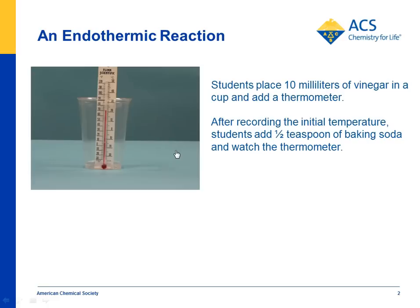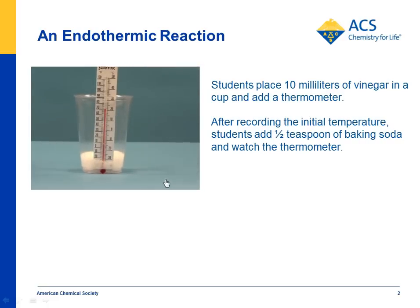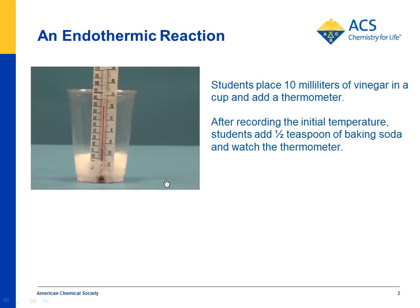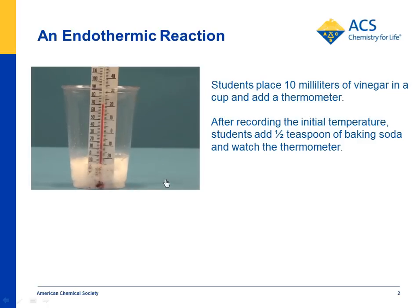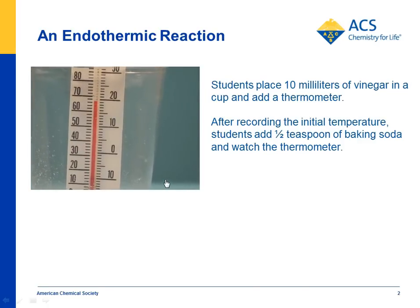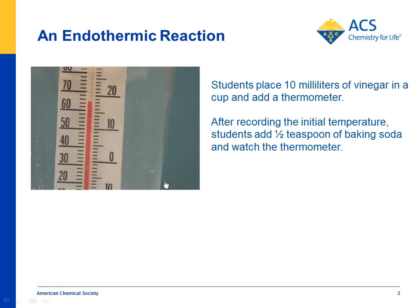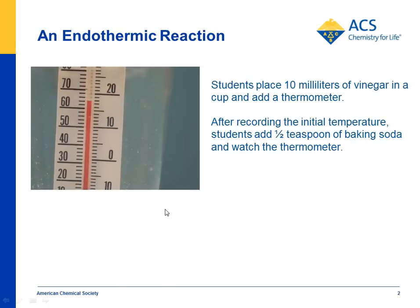Students first fill a cup with 10 milliliters of vinegar, put a thermometer in, check the initial temperature, and then add a half teaspoon of baking soda and watch the thermometer. There is a very obvious temperature decrease during this chemical reaction, so this reaction is endothermic.